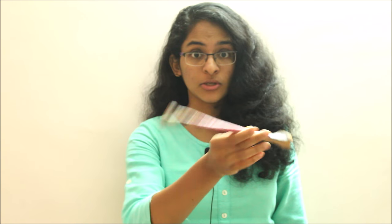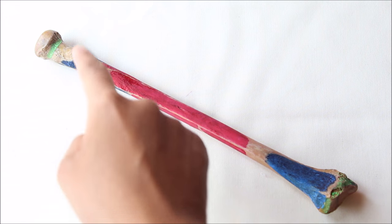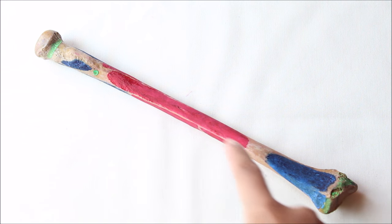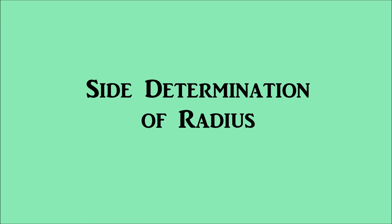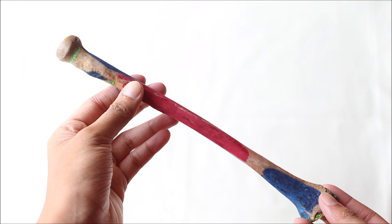Hello friends and welcome to my channel. Today we'll be learning about the radius. The radius is the lateral bone of the forearm and is homologous with the tibia of the lower limb. It has an upper end, a lower end, and a shaft. Now how do we determine the side of this radius?